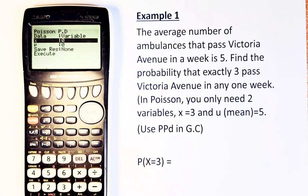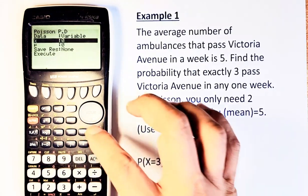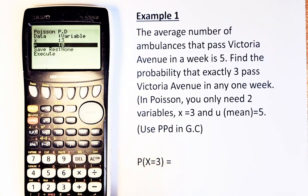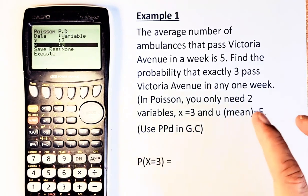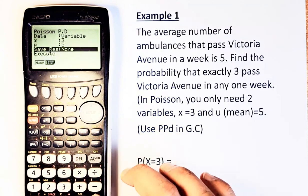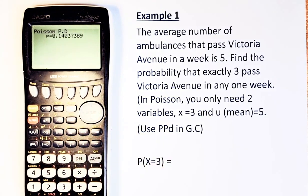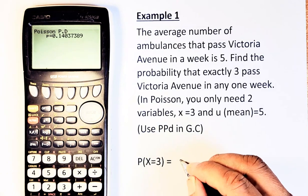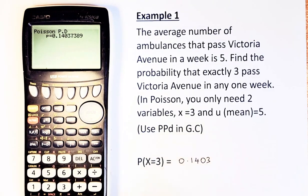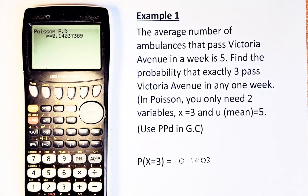Once you're in variable mode, you just need to enter X. As I said before, X is going to be 3, and then you execute, and your μ is going to be 5, that's the mean, and then execute, and then execute again, and the answer is going to be 0.1403. That is how you calculate the Poisson distribution.